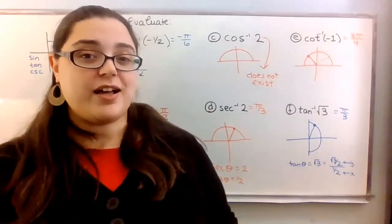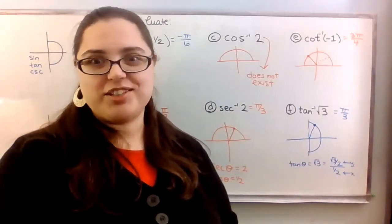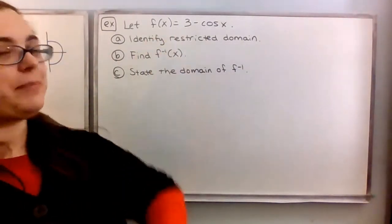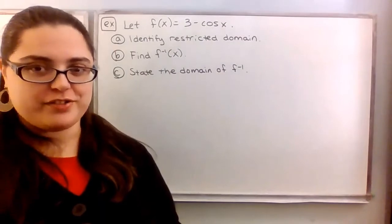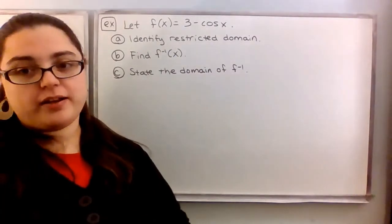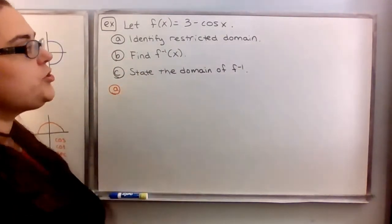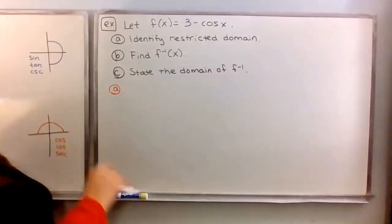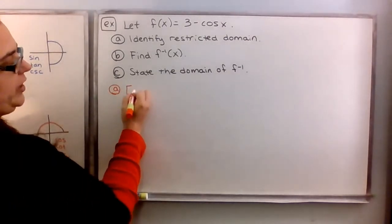Now let's find the inverse of a trig function. For f(x) = 3 − cos(x), we want to identify the restricted domain, find the inverse, and state the domain of that inverse. For part a: because this is cosine — which is in the north — the restricted domain goes from zero to pi.